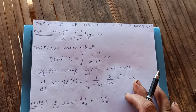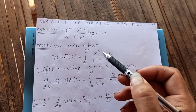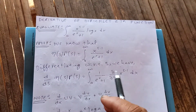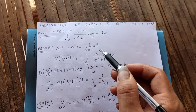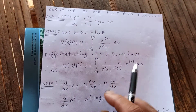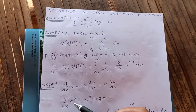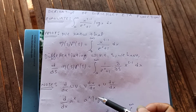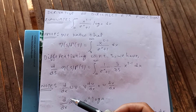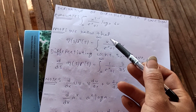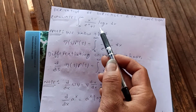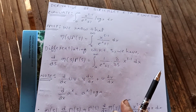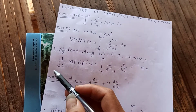In order to get this log x in the integrand, we are going to differentiate with respect to s. We know that differentiation of a to the x is a to the x times log a, so in order to bring down the log x, we differentiate with respect to s. That way we can recover the original integral we want to evaluate.